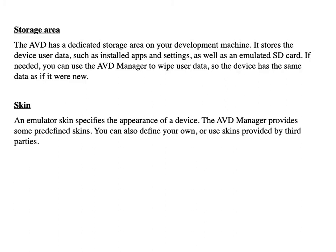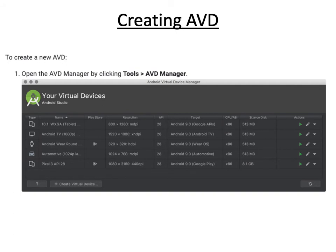The next component is the skin. An emulator skin specifies the appearance of a device. The AVD Manager provides some predefined skins, and you can also define your own or use a skin provided by third parties. To create a new AVD, click on the Tools menu, then AVD Manager, which will display a dialog window.